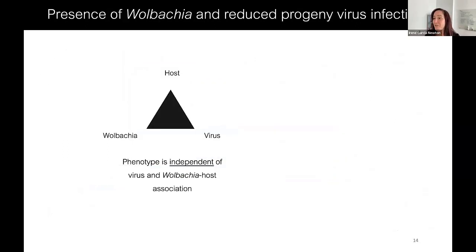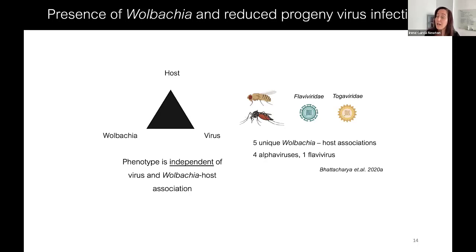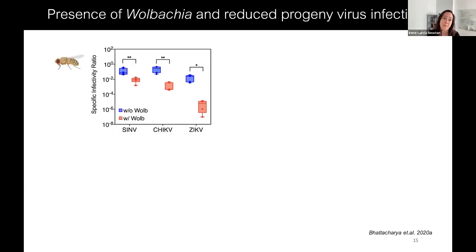This specific infectivity defect and the defects in genome replication made us really interested in understanding how Wolbachia alters the viral genome. We know this phenotype is independent of virus, Wolbachia, and host association. We have tested it in flies and in mosquitoes using four different alpha viruses and a flavivirus — we see a significant reduction in infectious particles with three different viruses from two different families.